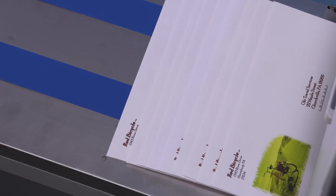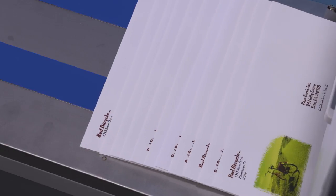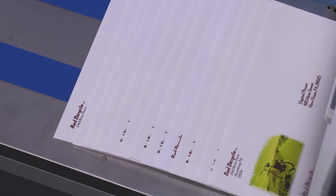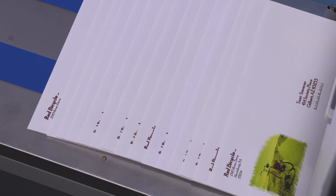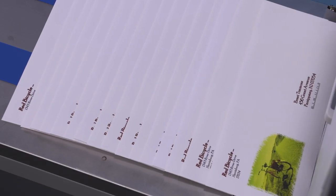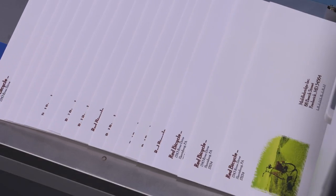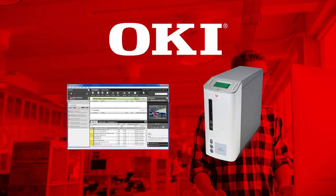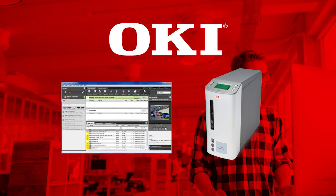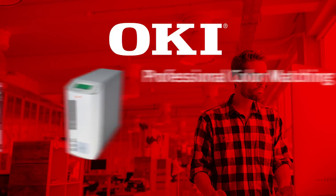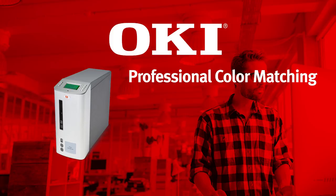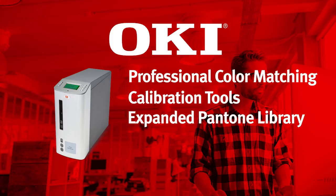Use the C941 DP Plus for targeted variable data direct mail campaigns. Basic variable data printing is supported throughout the C9DP Plus family and can be further enhanced with the addition of the Fiery C9 Server with Command Workstation. The Fiery C9 Server provides professional color matching, calibration tools, an expanded Pantone library, and support for industry-leading variable data formats.